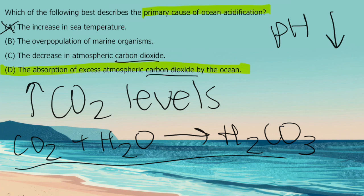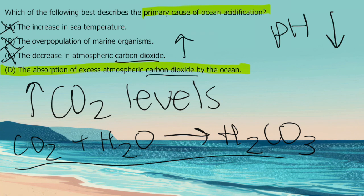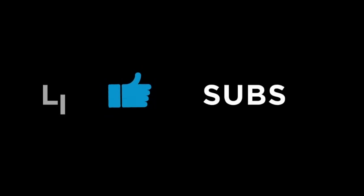Answer B, the overpopulation of marine organisms, doesn't deal with ocean acidification at all. Answer C says the decrease in atmospheric carbon dioxide, which is incorrect — there has been an increase in atmospheric CO2 — which leads us to the correct answer of D. I hope this was helpful. Check out our other videos on YouTube and visit Study.com for Praxis test prep courses with hundreds of practice problems, targeted instruction, and test-taking strategies. If you found this helpful, please like and subscribe. Good luck and happy studying!